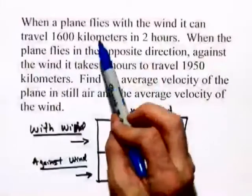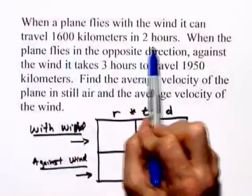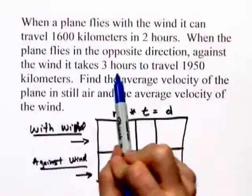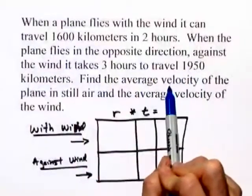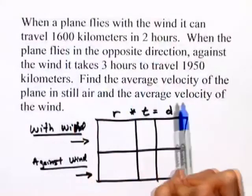Let's look at an example of an airplane. In this problem, we've got a plane that flies with the wind. It can go 1,600 kilometers in 2 hours. However, when it flies against the wind in the opposite direction, it takes 3 hours to go 1,950 kilometers. What we want to do is find the average velocity of the plane in still air and the average velocity of the wind.